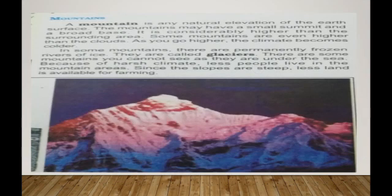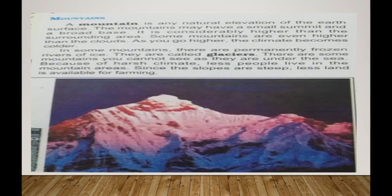First, we will discuss the first landform: mountains. A mountain is any natural elevation of the Earth's surface. Mountains may have a small summit and a broad base. It is considerably higher than the surrounding area. Some mountains are even higher than the clouds. As you go higher, the climate becomes colder. In some mountains there are permanently frozen rivers of ice.